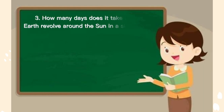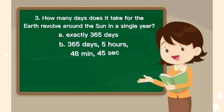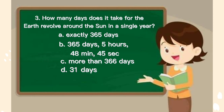Number 3. How many days does it take for the earth to revolve around the sun in a single year? A. Exactly 365 days, B. 365 days, 5 hours, 48 minutes, and 45 seconds, C. A little more than 366 days, D. 31 days. The answer is B.